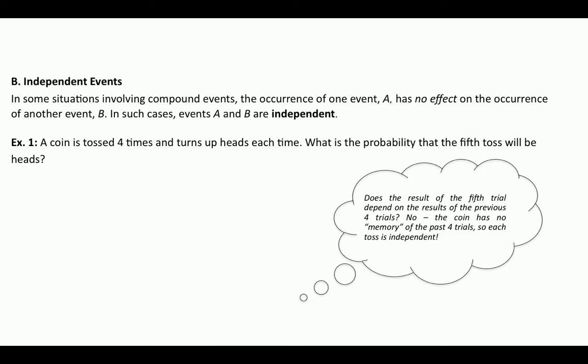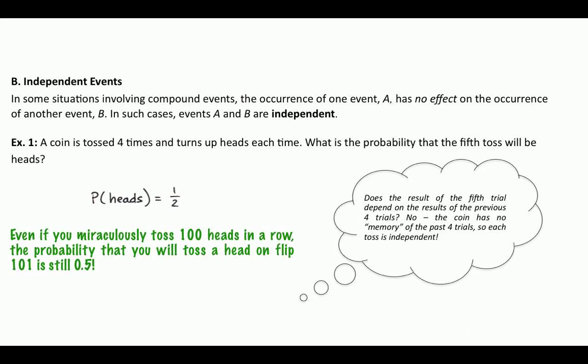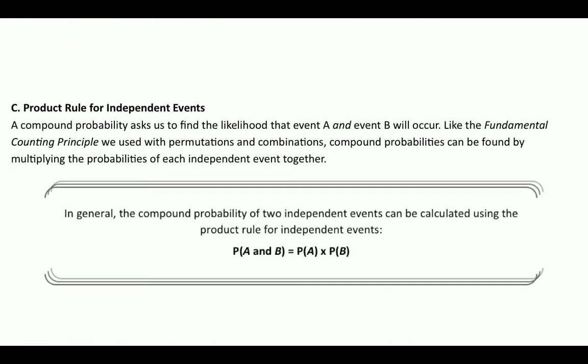Back to the example: a coin tossed four times, turns up heads each time — what's the probability the fifth toss will be heads? The probability of heads in any independent trial is one half. Even if you miraculously toss a hundred heads in a row, the probability that you toss a head on flip 101 is still 0.5. The probability in total of tossing a hundred heads in a row is very low, but it doesn't affect the individual probability of that next individual trial.